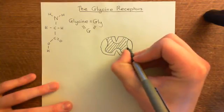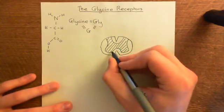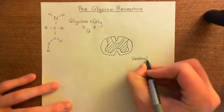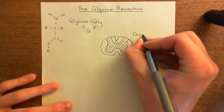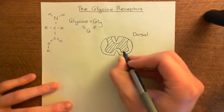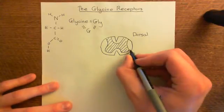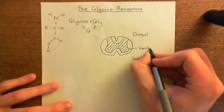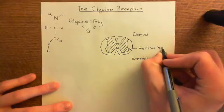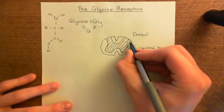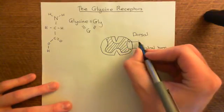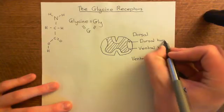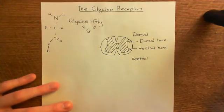The processes of the grey matter that extend ventrally — this is the front, the ventral aspect of the spinal cord, and this is the dorsal aspect — those are called the ventral horns of the spinal cord. And the processes which extend dorsally are the dorsal horns of the spinal cord.